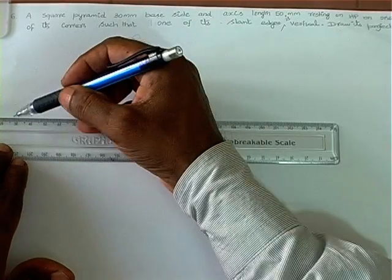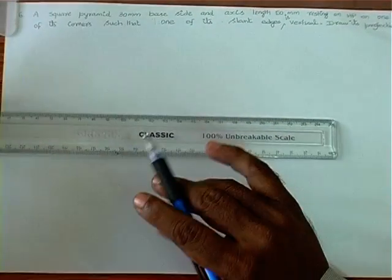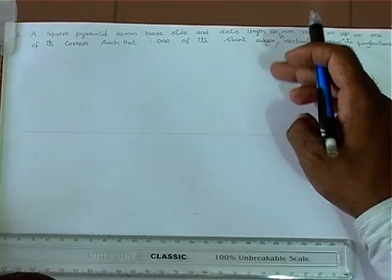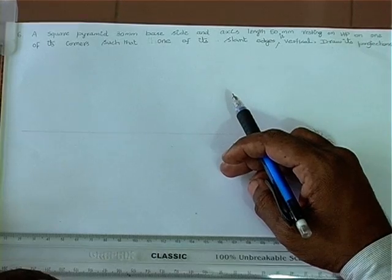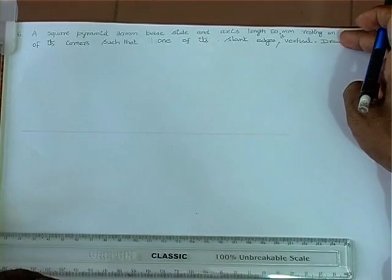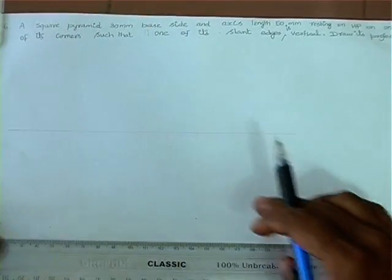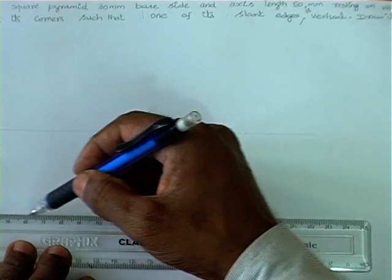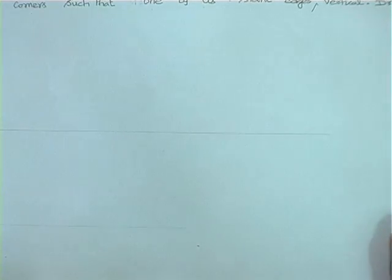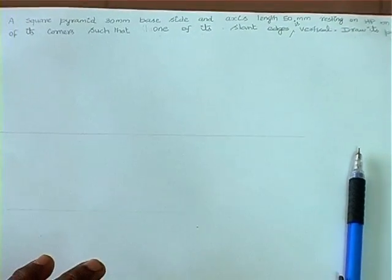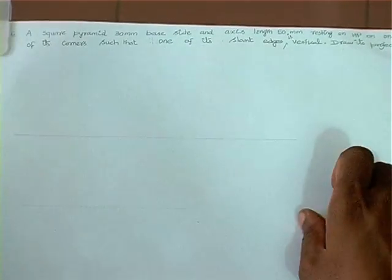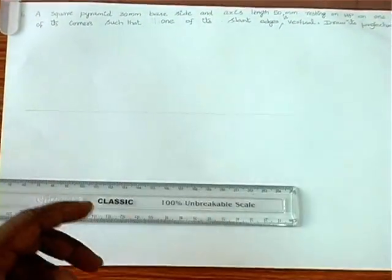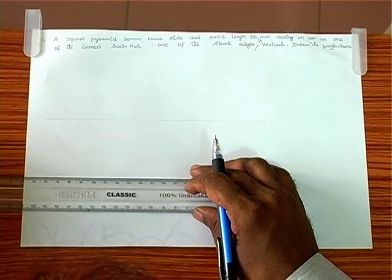First we draw the reference line. Here is a square pyramid of 30mm base side and 50mm height, but it has to be placed on HP on one of its corners. So we need to draw the top view first, because the solid is resting on HP. If the solid were resting on VP we would draw the front view first.